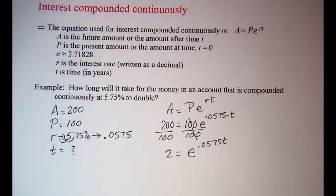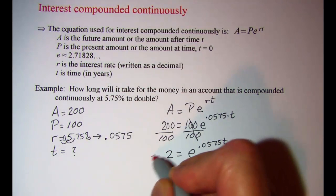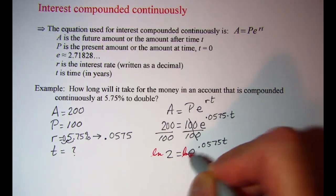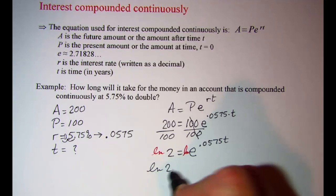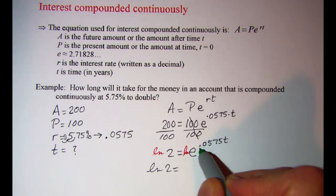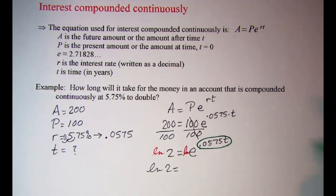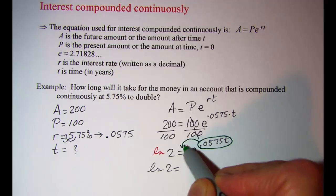Now since my variable is in the exponent, I'm going to need to log both sides of this equation. And since my base of my exponential is E, rather than use a common log, I'll use a natural log. So I'm going to ln both sides. So on the left, I have ln2. And on the right, I'm going to use the property for logarithms that allows me to take this exponent on the argument and write it in front of the logarithm as a coefficient.